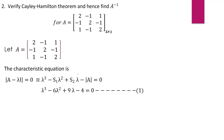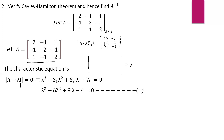Here A minus lambda I — writing the simplified step, A is a matrix and lambda is multiplied to the 3×3 identity matrix. The determinant of (A minus lambda I) equals: A matrix is [2, -1, 1; -1, 2, -1; 1, -1, 2]. Lambda times the identity matrix has lambda on the diagonals. Simplified, the (1,1) entry becomes 2 minus lambda, (2,2) becomes 2 minus lambda, (3,3) becomes 2 minus lambda.